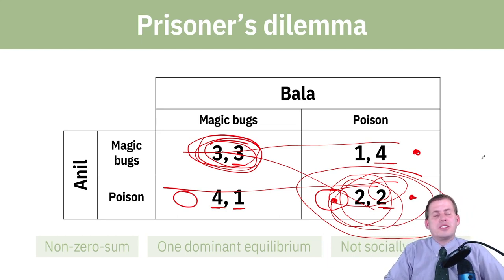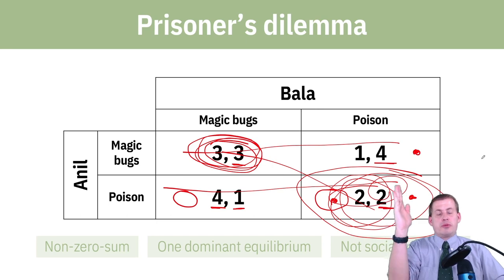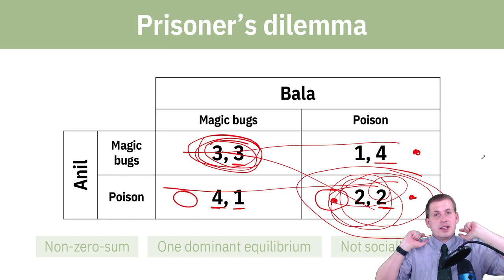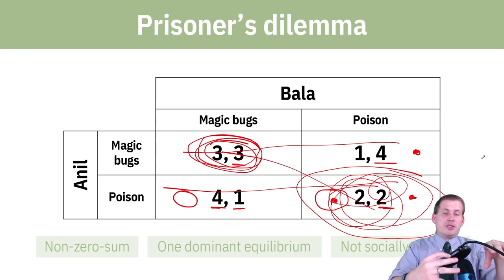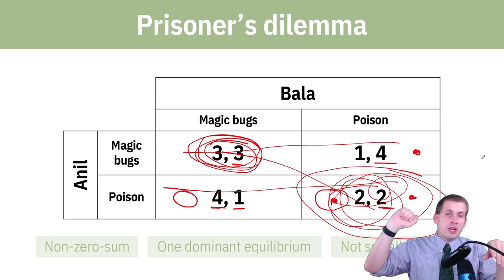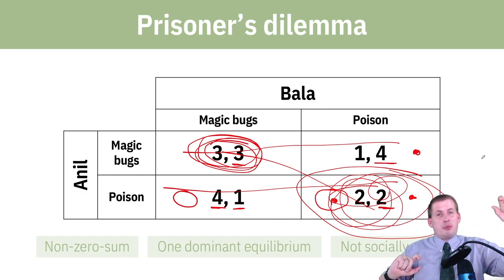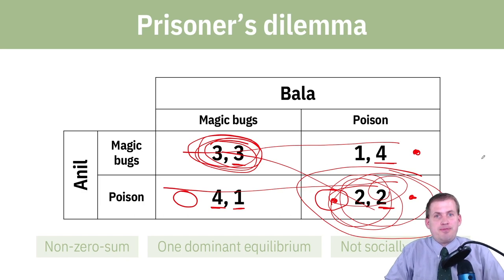That is a quick crash course into game theory. All you need to remember is: cover up the columns, figure out which number is highest; cover up the rows, figure out which number is highest; and see if there are any Nash equilibria. If there's just one, that's always going to be the choice. If there are two, it'll be one of those two choices depending on how people gamble — but you might end up in the off squares with worse outcomes.